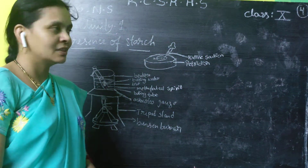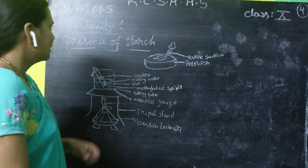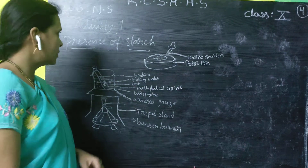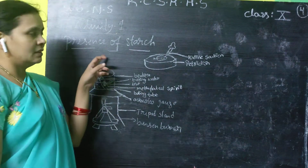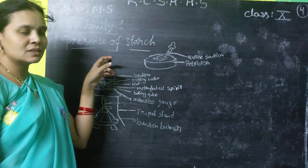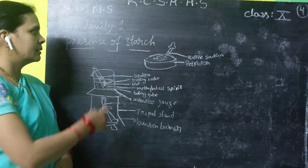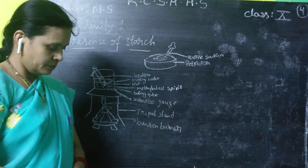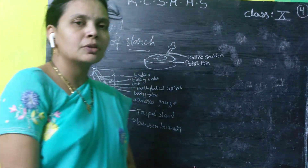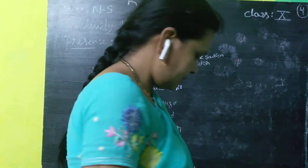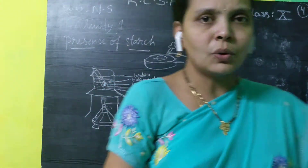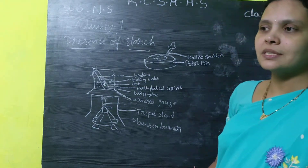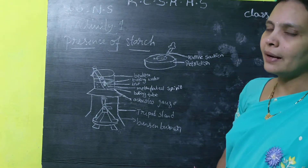So go back to class. I should continue the lesson about nutrition. In today's class we can discuss an activity about the presence of starch. In the previous class we were discussing about photosynthesis — a special type of light process that is carried out by plants.